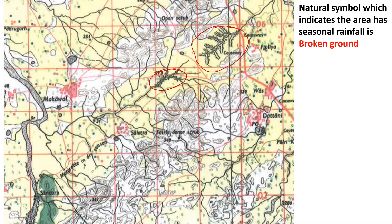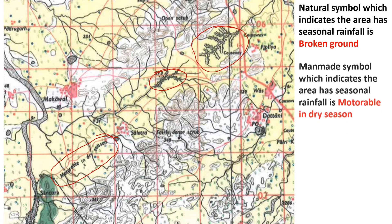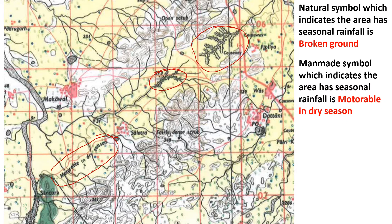So whenever it is asked, the natural symbol which indicates an area has seasonal rainfall is broken ground. Now, what is a man-made symbol which indicates an area has seasonal rainfall? Look at this — it is 'motorable in dry season,' meaning there is a wet or rainy season when you cannot use the road.